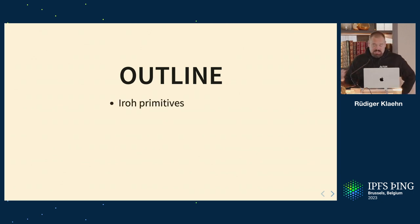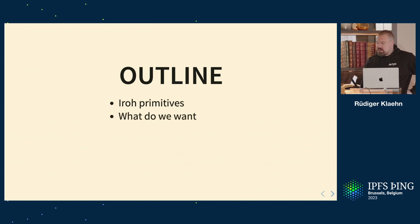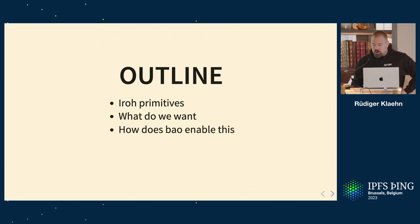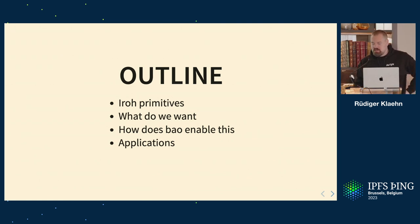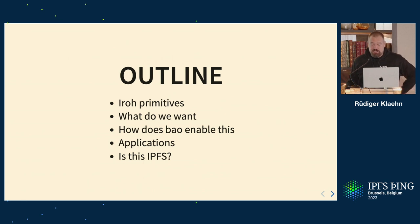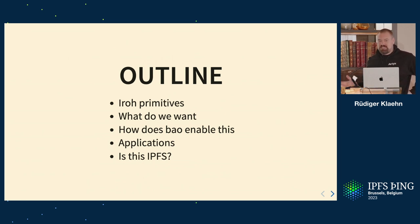The outline is: first, what primitives does the new Arrow offer; then what do we want out of this; how does BAU enable this; some applications where this works very well and some where it doesn't; and finally a discussion about whether this can still be considered IPFS, because it is quite a departure from some things.